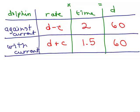Alright, so to write the equations we need to take the rate times the time. I'm going to write it as the time times the rate. So the two is in front of the parentheses, d minus c equals 60.